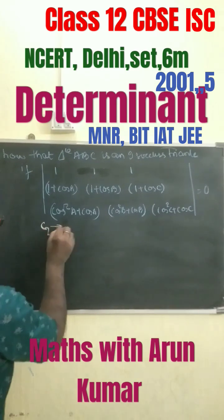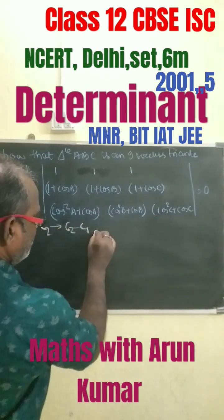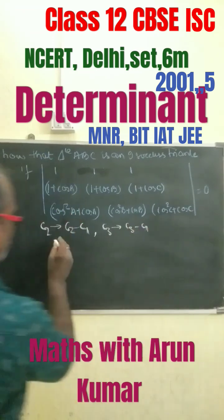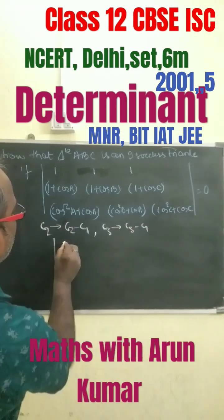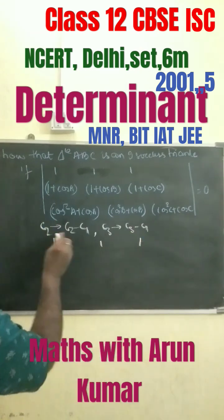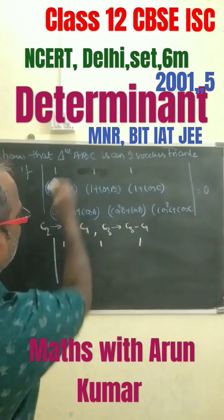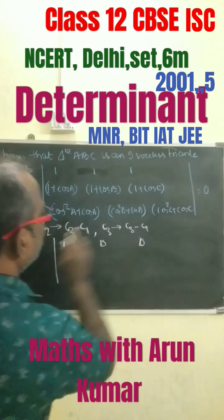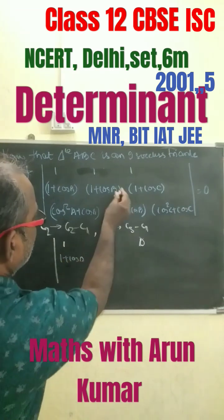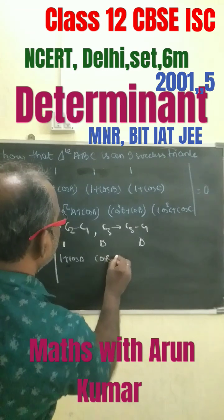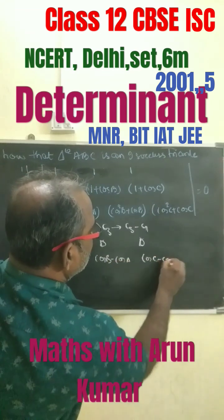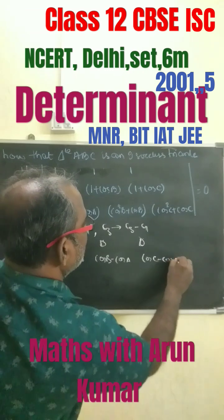First we do column 2 minus column 1, and column 3 minus column 3 minus column 1. So we get here 1, 1, 1. For column 2 minus column 1, we get 0. Here we get 0. Then 1 plus cos A; this minus this is cos B minus cos A, and here cos C minus cos A.